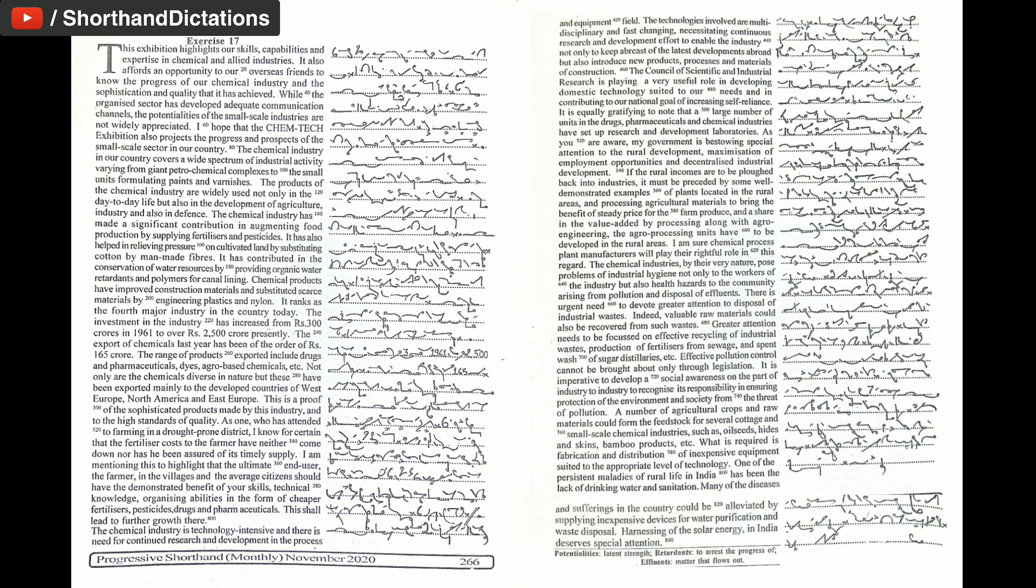A number of agricultural crops and raw materials could form the feedstock for several cottage and small-scale chemical industries such as oilseeds, hides and skins, bamboo products, etc. What is required is fabrication and distribution of inexpensive equipment suited to the appropriate level of technology.